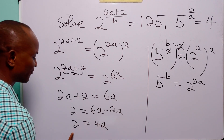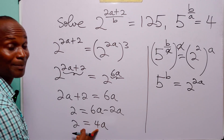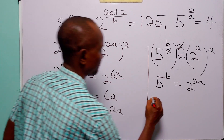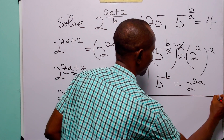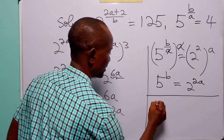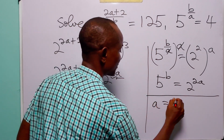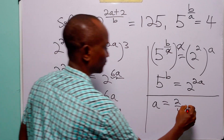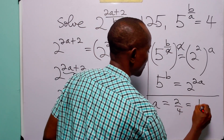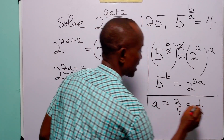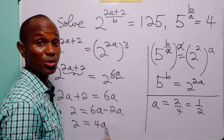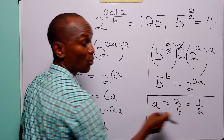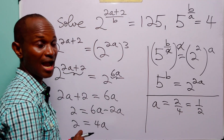Dividing both sides by 4, we have A equals 2 over 4, which of course simplifies to one half. So now we have found that the value of A is equal to 1/2.